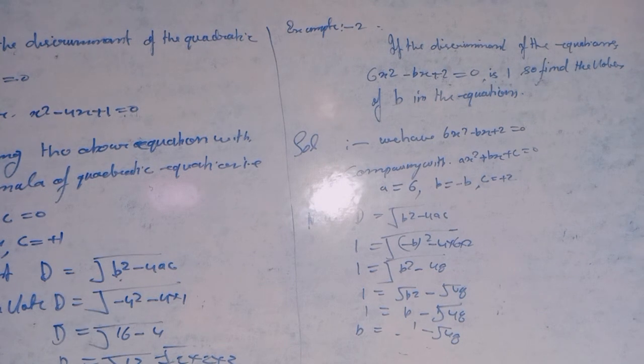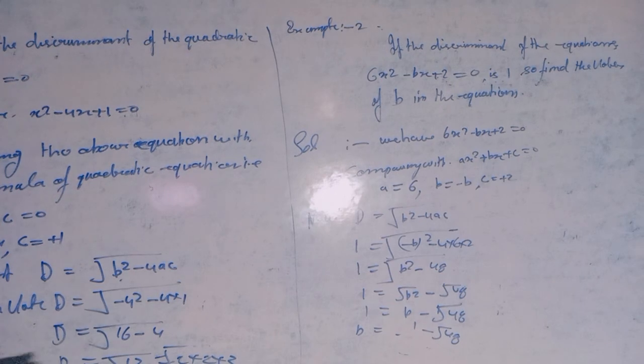From this equation, 1 equals B squared minus 48, so B squared equals 48 plus 1, which means B squared will equal 49.